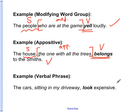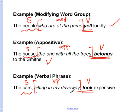Another example with a verbal phrase between the subject and verb: The cars sitting in my driveway look expensive. The main verb is look and the subject is cars. We have a plural subject, so the form of the verb must be the plural form — look, L-O-O-K, no S on the end. We have the verbal phrase sitting in my driveway between them. We must be careful, because driveway is singular. If we thought driveway was the subject, the verb form would be looks — and the sentence would read: The cars sitting in my driveway looks expensive — which would be incorrect.